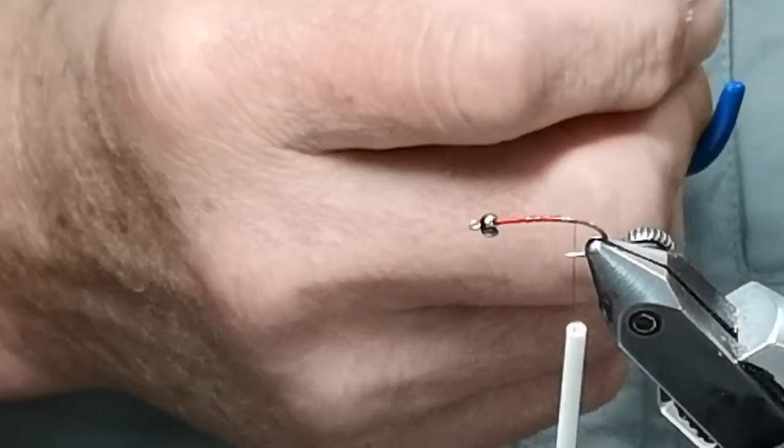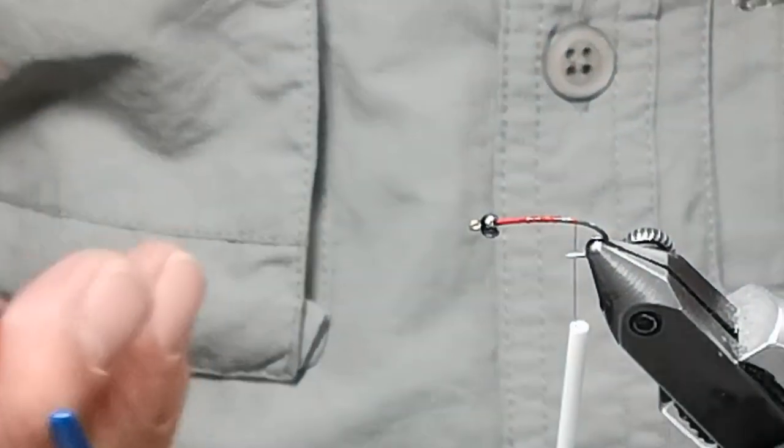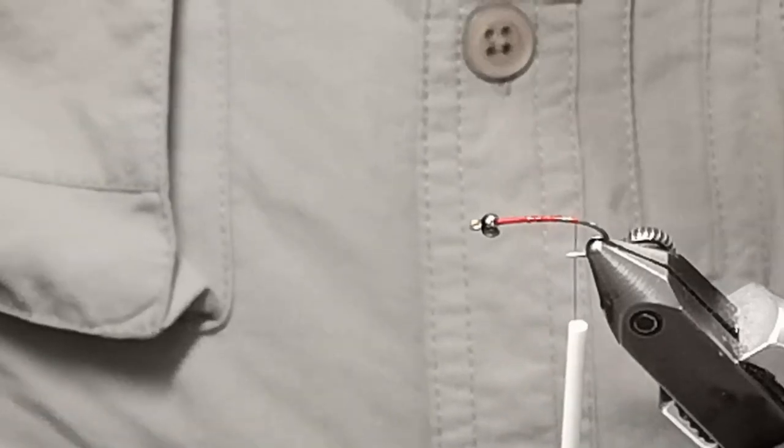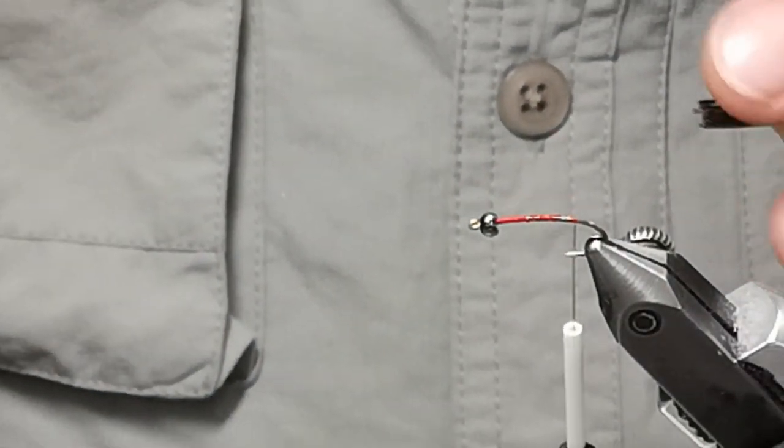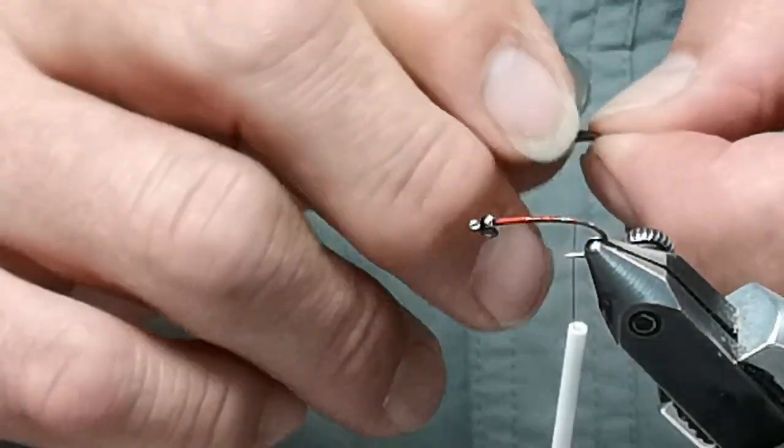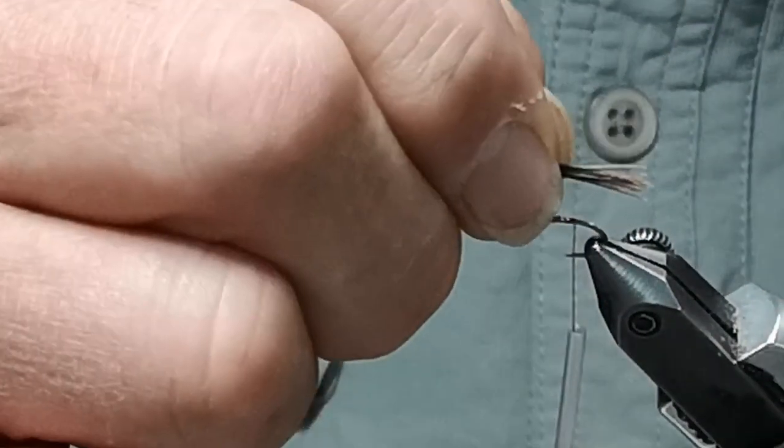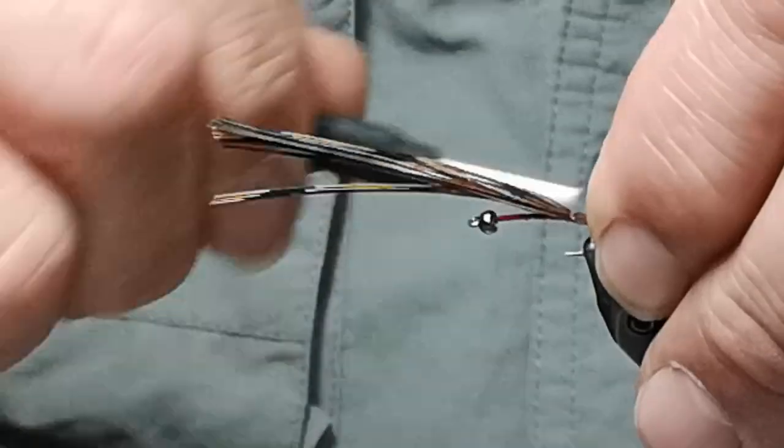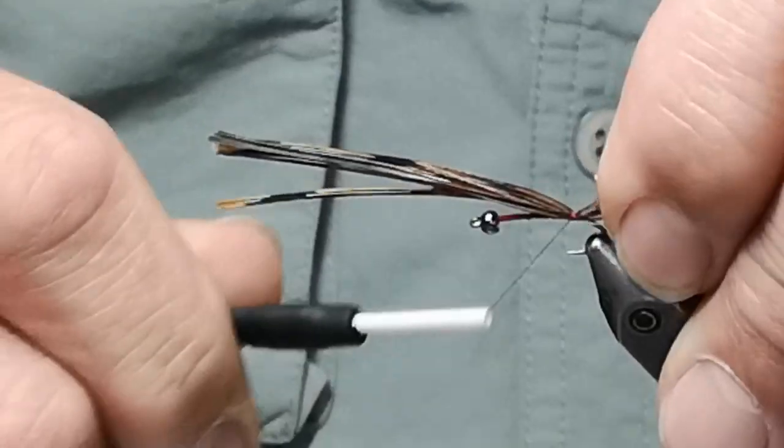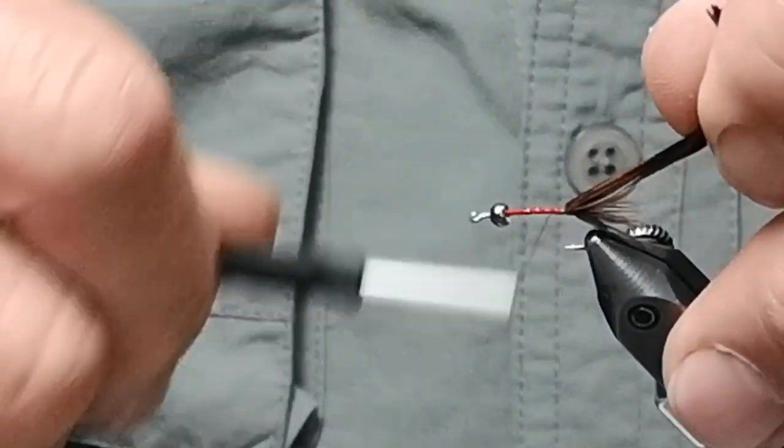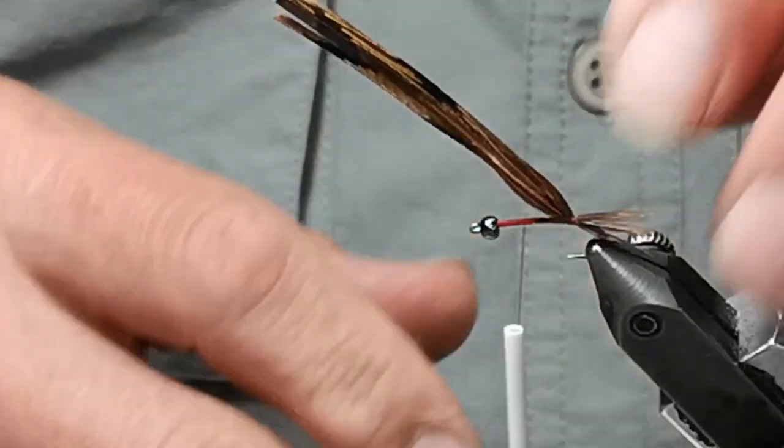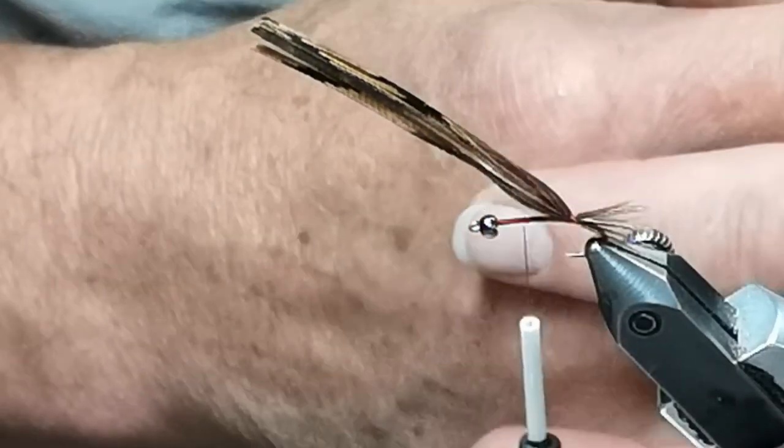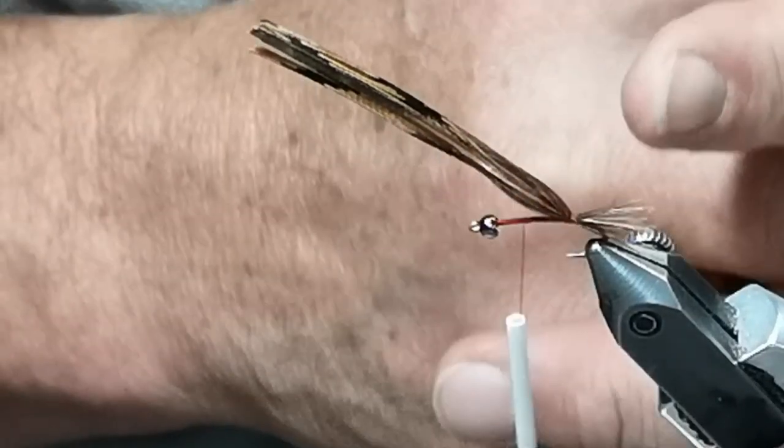Crawlers and clingers are really short mayflies. The burrower and the swimmer are longer mayflies, so you tie them on longer hooks and they act differently in the river. They actually swim faster. The crawlers and clingers hang around the rocks and will sometimes get knocked off and tumble along the river bottom, but these swimmers actually move along quite fast.